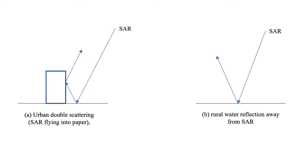Rural flooding adjacent to the urban areas, as in B, will often have a low return in the flooded image compared to the unflooded, because the water reflects the radiation away from the sensor.